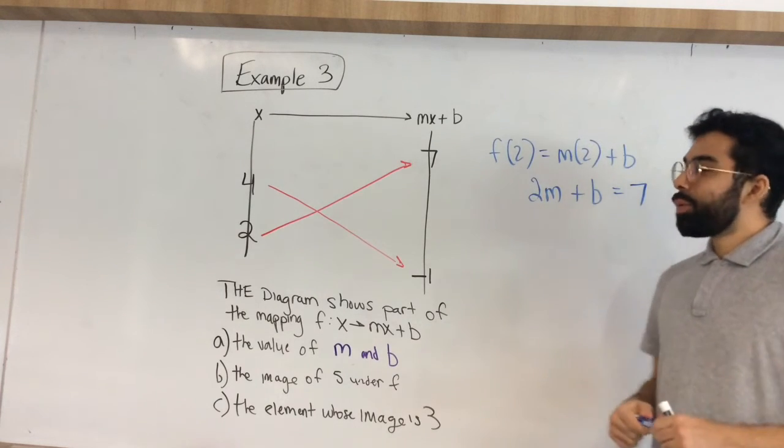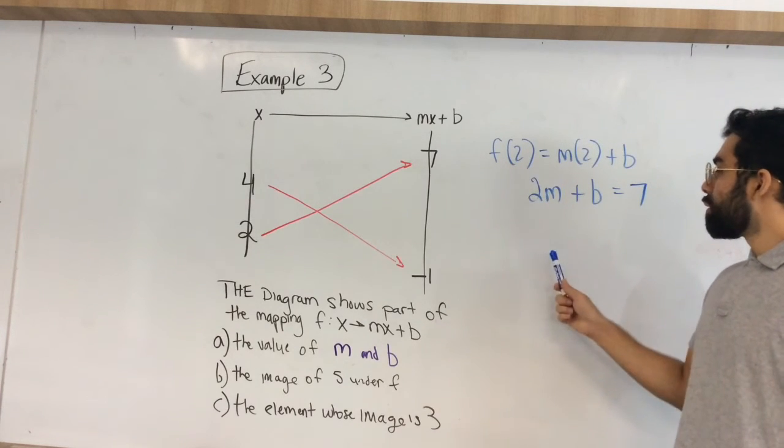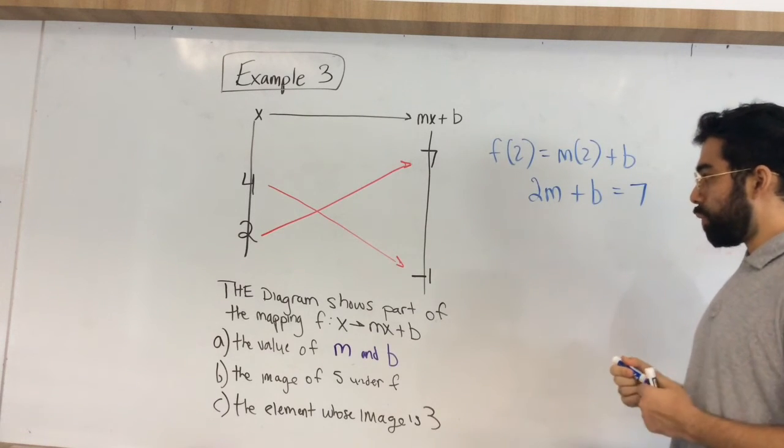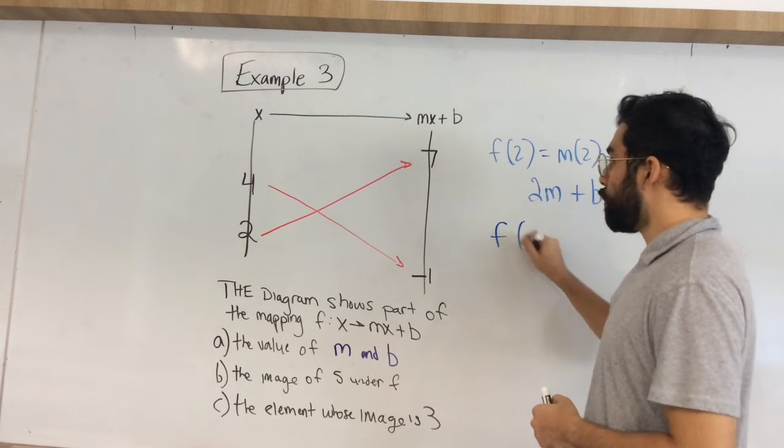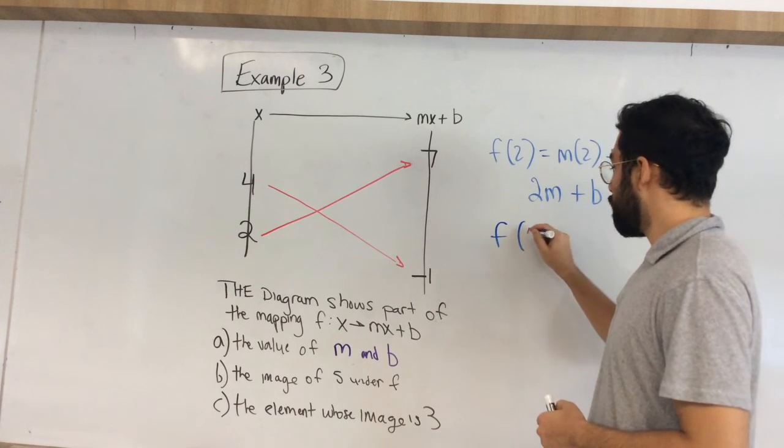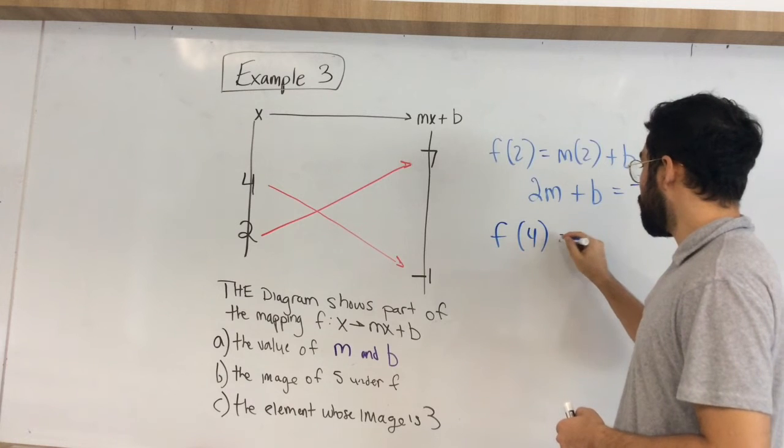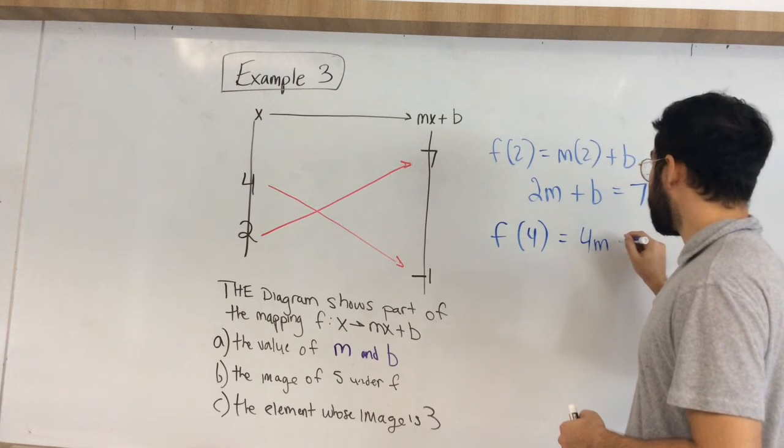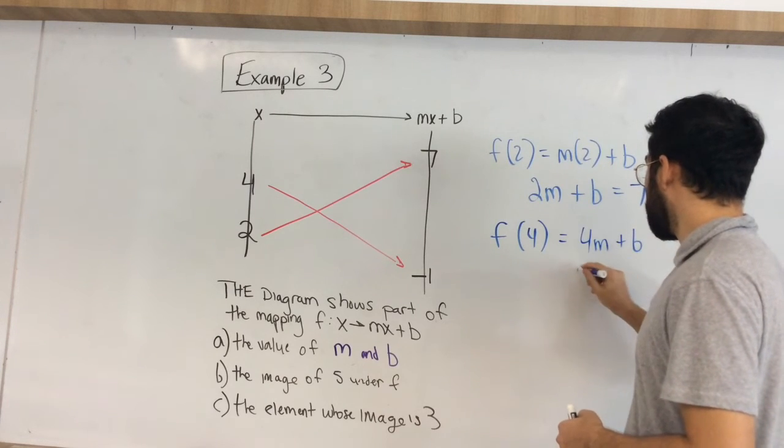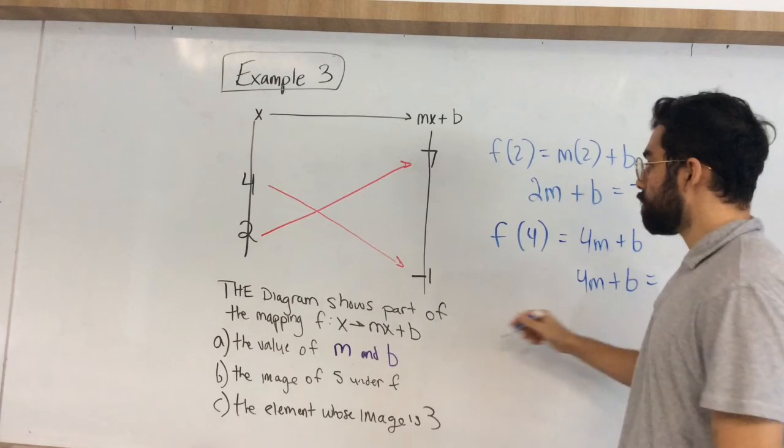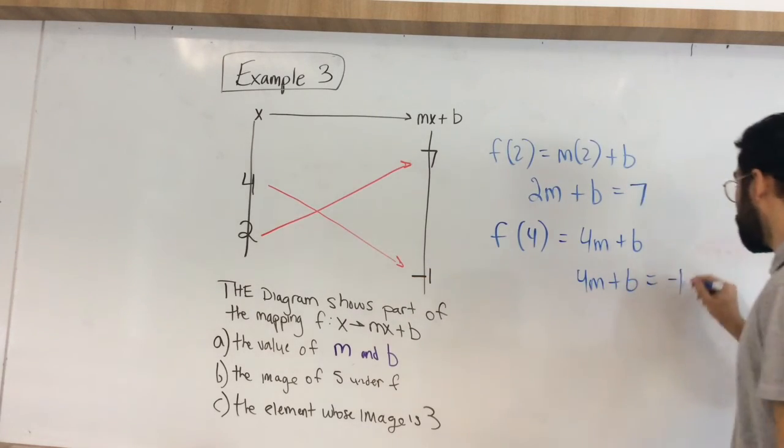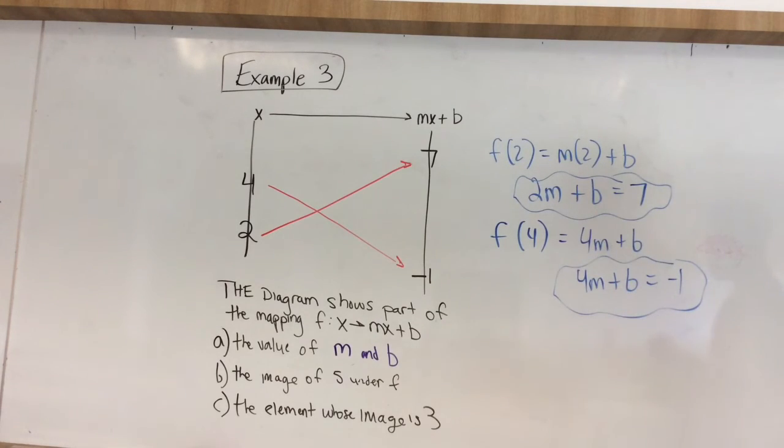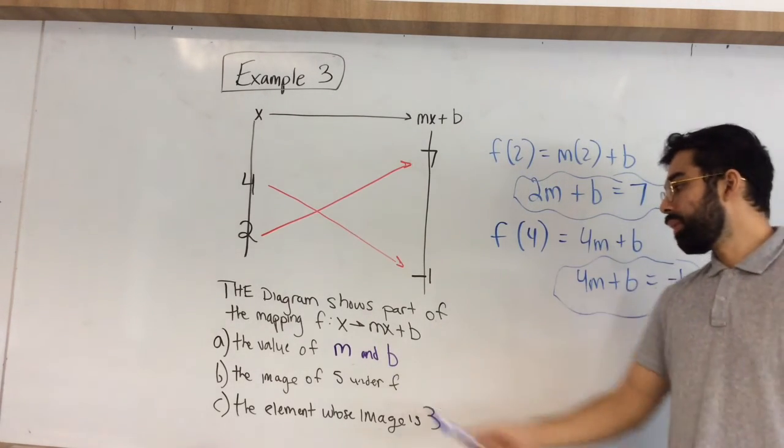All right, sorry about that, the light just went out. So the next thing we gotta do, 2m plus b is equal to 7, that's what we get when we plug in 2. What do we get when we plug in 4? Output is negative 1, let's go ahead and plug it in. So 4m plus b, 4m plus b is equal to negative 1. So what we have here is what we can use is simultaneous equations, which will be our next step to find what m and b represent.